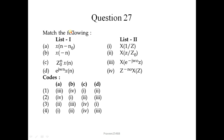Question number 27 - match the following. In list 1 discrete functions are given, and in list 2 their Z-transforms are given. For X(n - n₀), the Z-transform is Z^(-n₀) · X(Z). For Z₀^n · X(n), the Z-transform is X(Z/Z₀). For e^(jω₀n) · X(n), using the duality property you can get the Z-transform. So the correct answer is 4-1-2-3.